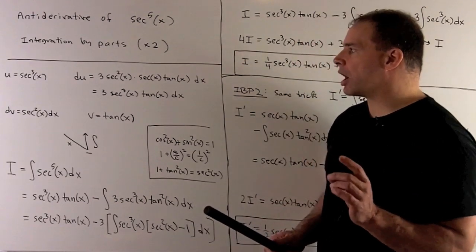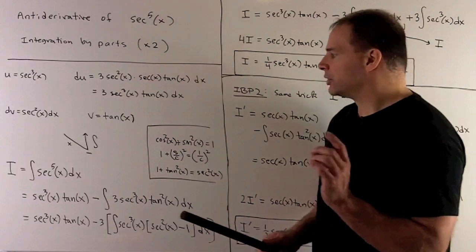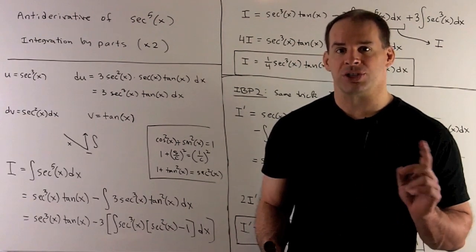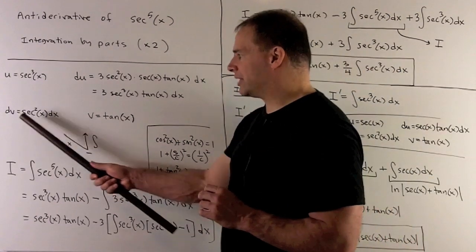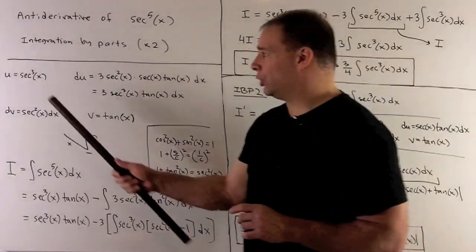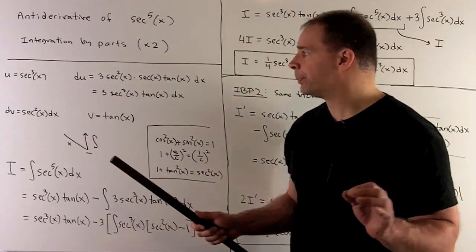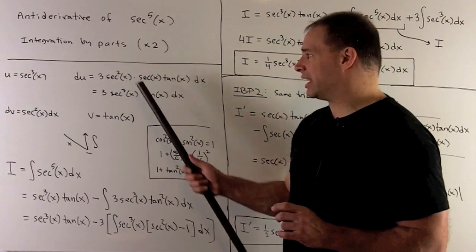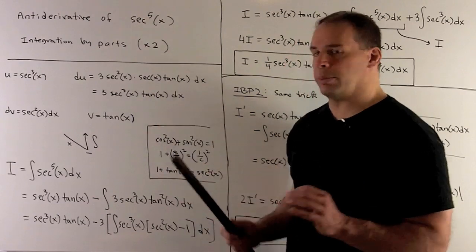We're going to do integration by parts. We're hunting for something in our integrand that we can take the integral of. For secant x to the fifth power dx, the candidates are either secant x dx or secant squared dx. We'll go with secant squared dx — its antiderivative is tangent x. That leaves u equal to secant cubed x. Taking its derivative using the chain rule gives du equals three secant squared x times secant x tan x dx, which collapses to three secant cubed x tan x dx.